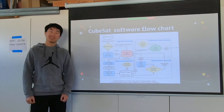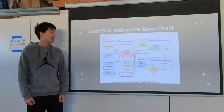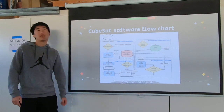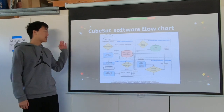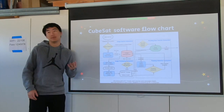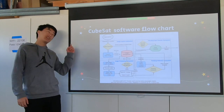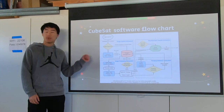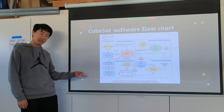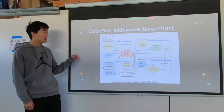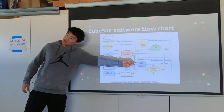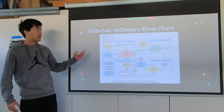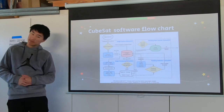Hello, I'm Michael, and let's talk about our CubeSat software flow diagram. Right off the bat, we have four subsystems: the image capture subsystem, the image processing subsystem, the flooding detection subsystem, and the data transfer subsystem.